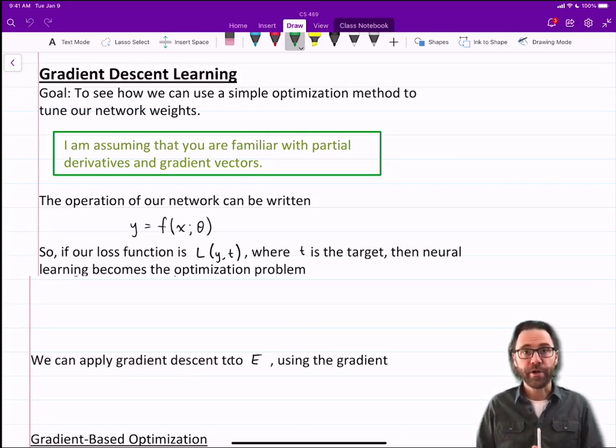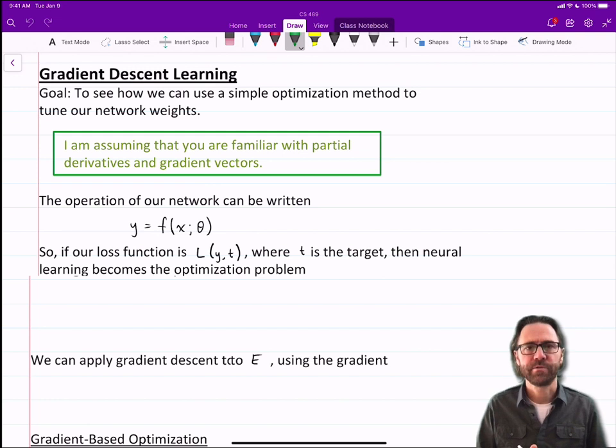Now we're going to get into neural learning. So we've formulated the problem of learning, the optimization problem of neural learning. Now let's look at an actual solution to it. So today we're going to learn about gradient descent learning. The goal is to see how we can use a simple optimization method to tune our network weights.